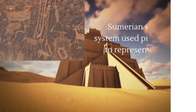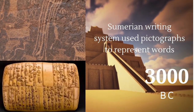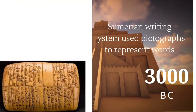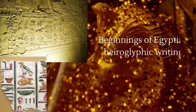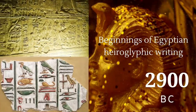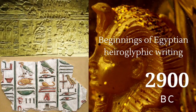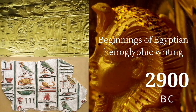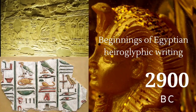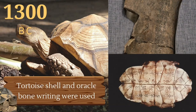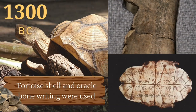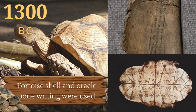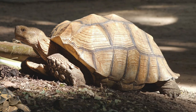Starting in the year 3000 BC, the Sumerian writing system used pictographs to represent words. In 2900 BC, there were the beginnings of Egyptian hieroglyphic writing. Hieroglyphs combined logographics, syllabic, and alphabetic elements with some 1000 distinct characters. In 1300 BC, tortoise and oracle bone writing were used, and the words were inscribed with knives.